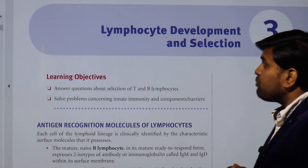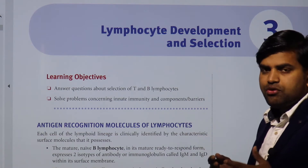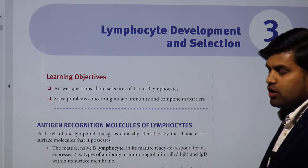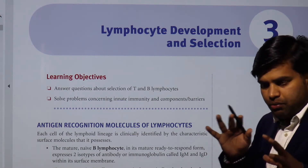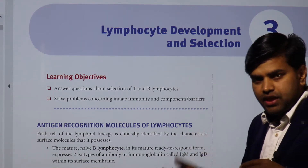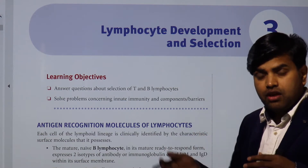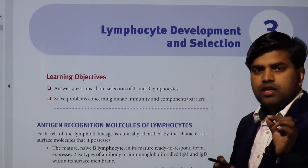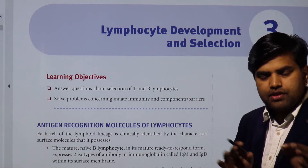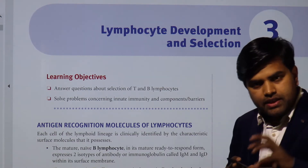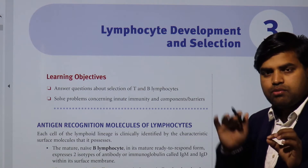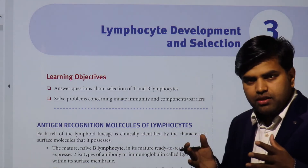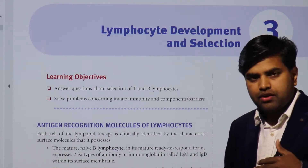Hello and good morning everyone. Today we will be moving forward towards our next chapter of USMLE immunological section — Kaplan microbiology — on lymphocyte development and selection. We need to understand how B cells and T cells are developed, when surface markers appear, and how we can use those surface markers to identify at which stage a cell was arrested or developed some immunological deficiency or disorder.